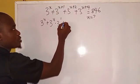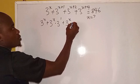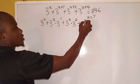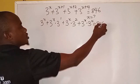So we're going to have this. The same thing we did here: 3 to the power of x multiply by 3 to the power of 2 plus 3 to the power of x multiply by 3 to the power of 4 equals 846.